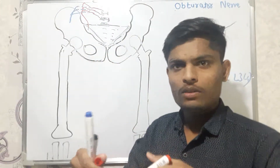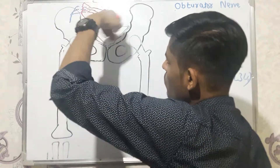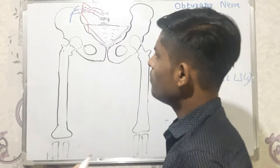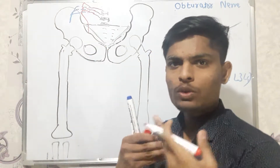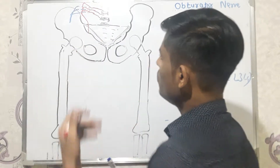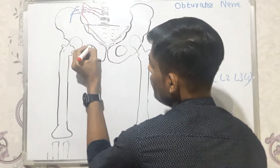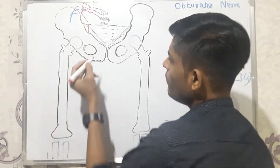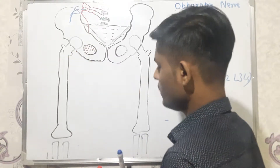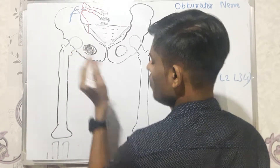As the obturator nerve descends, it reaches the obturator foramen. The obturator foramen is covered by a membrane called the obturator membrane. The obturator nerve then pierces the obturator membrane to exit the pelvic cavity.